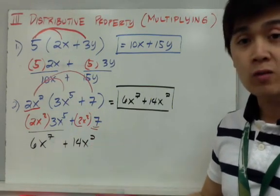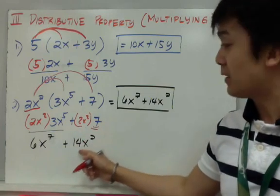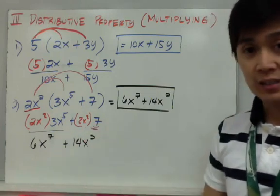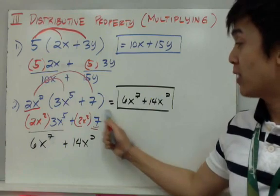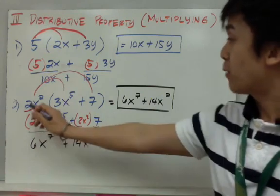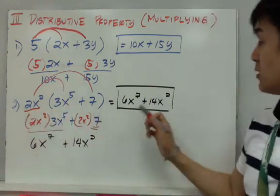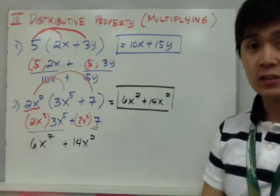So 2 × 7 is 14, and x² is just x² because there's nothing to multiply it with the constant. So my product for number 2 is 6x⁷ + 14x².